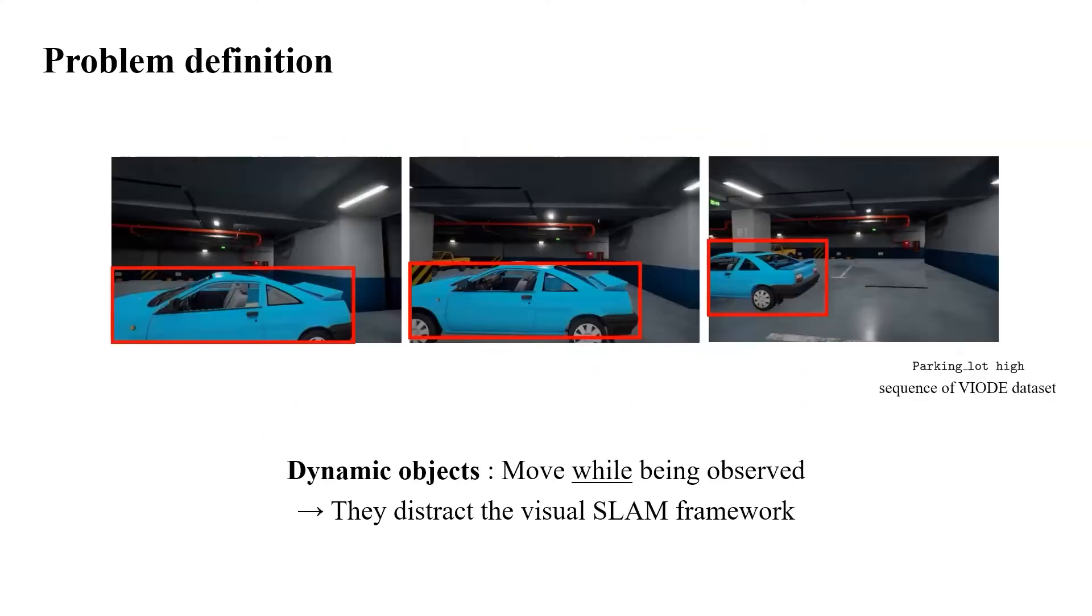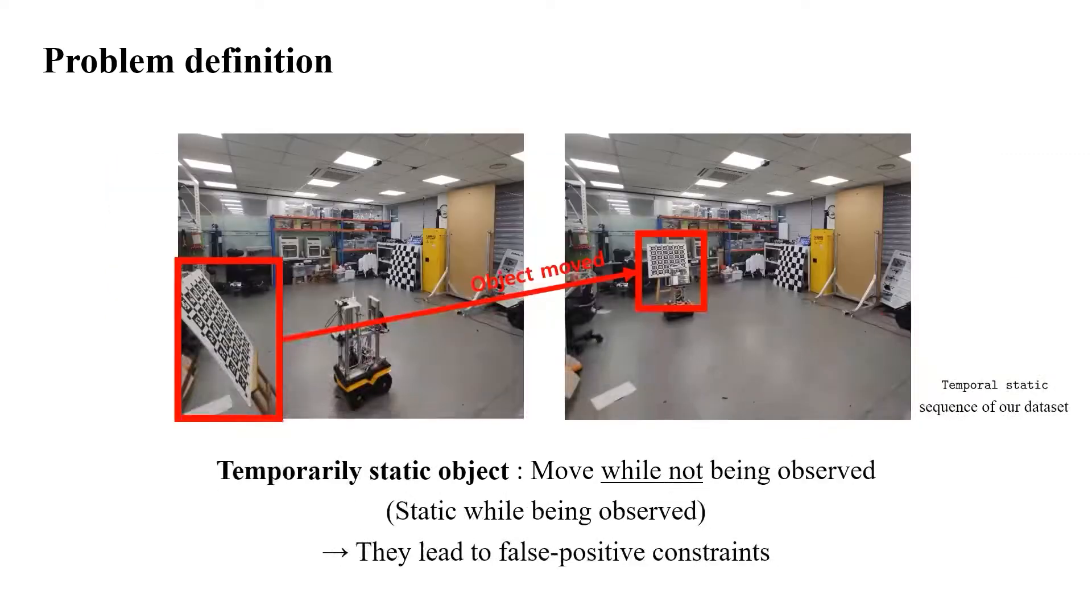The dynamic objects represent the objects which move while being observed. These objects distract the visual SLAM framework. And the temporarily static objects represent the objects which are static while being observed, but move while not. These objects lead to false positive constraints in loop closure procedure.